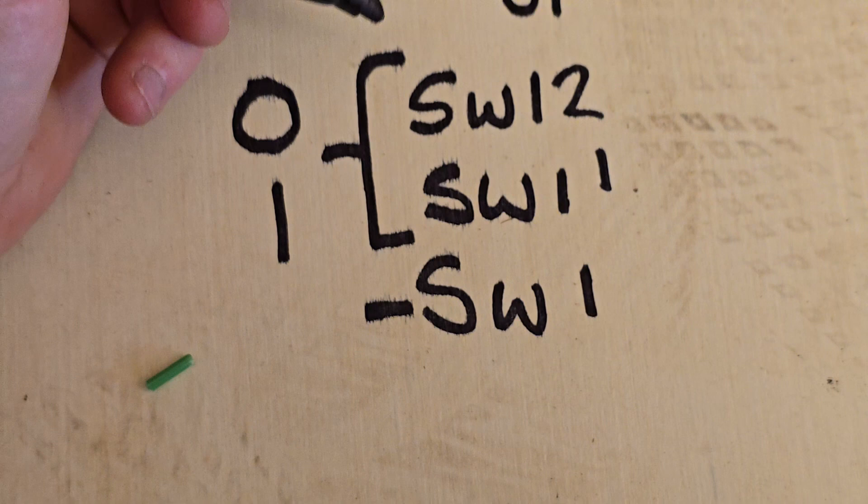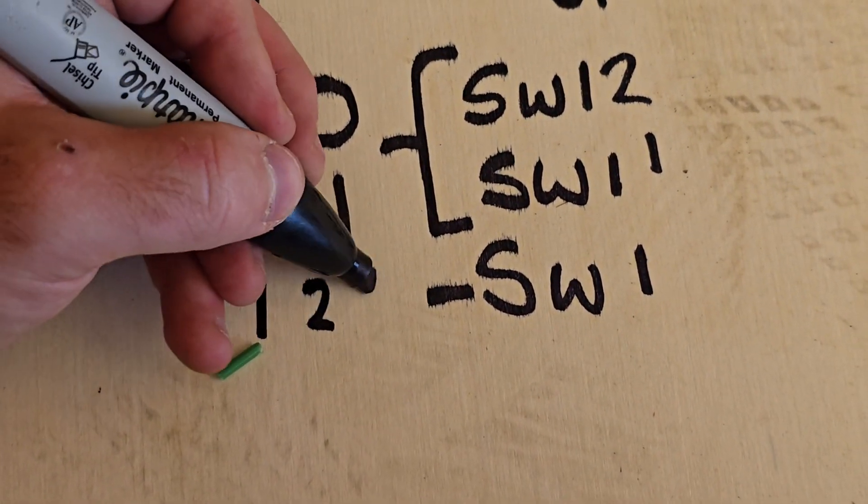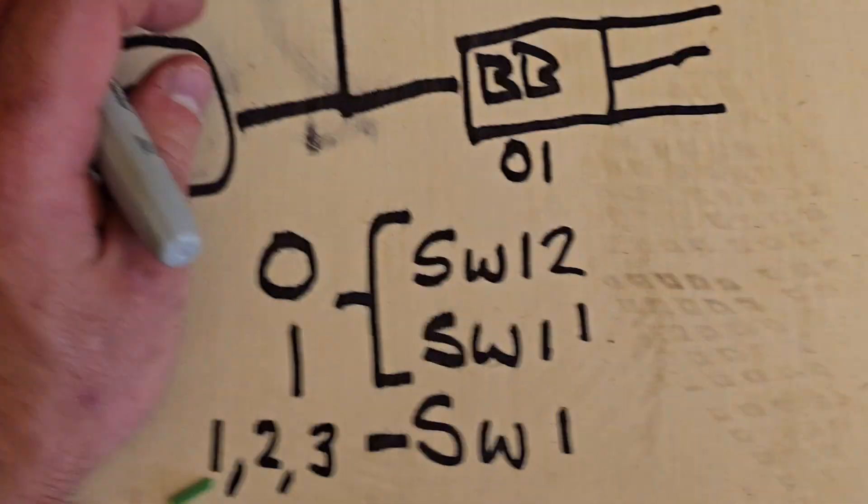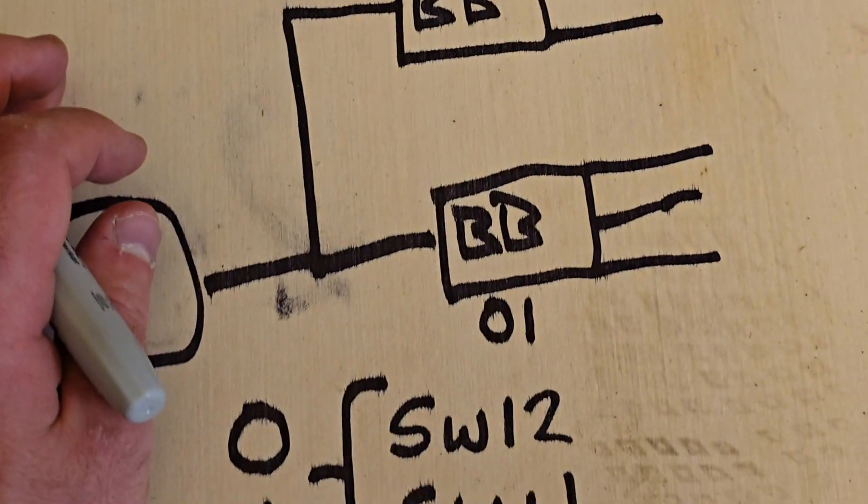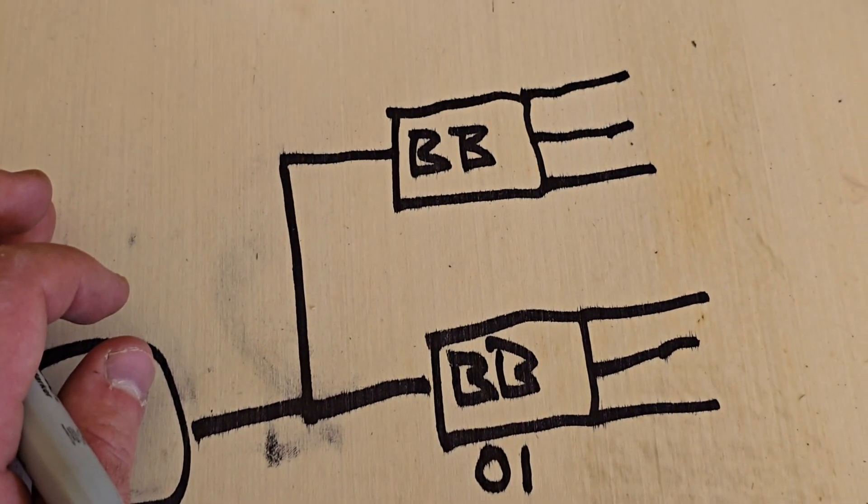And on these DIP switches, I have one, two, and three turned on. Now your second branch box, if you have another one in the system, it's going to pick up right where you left off. This branch box up here is going to be labeled 04.